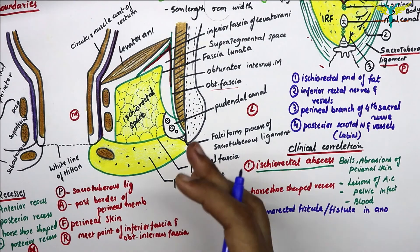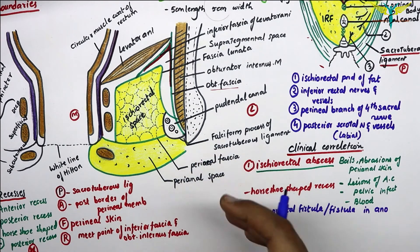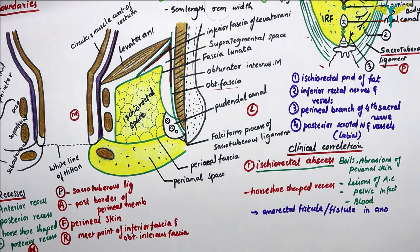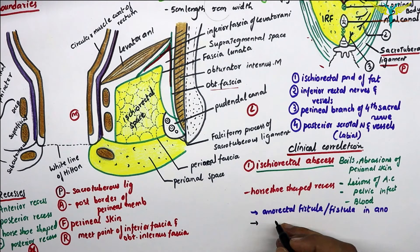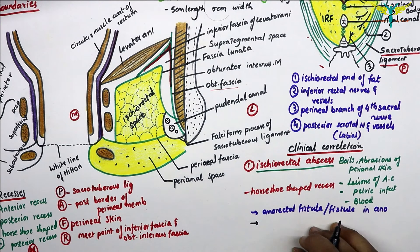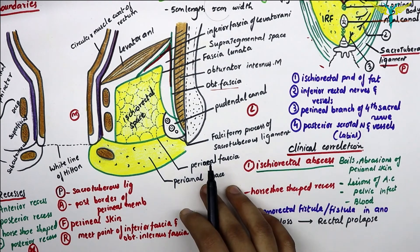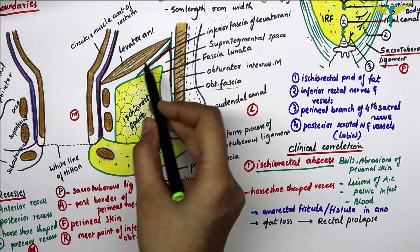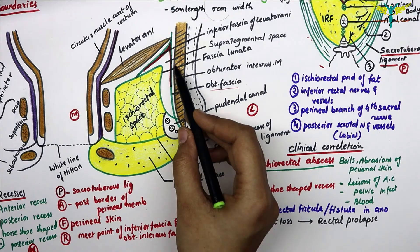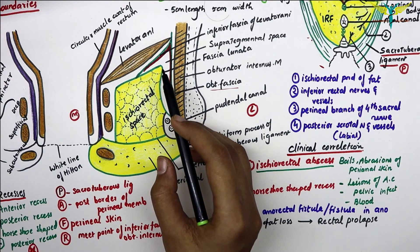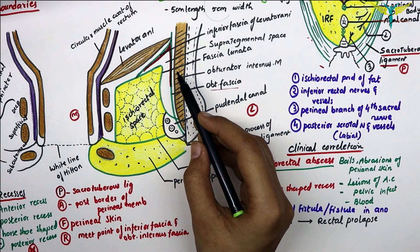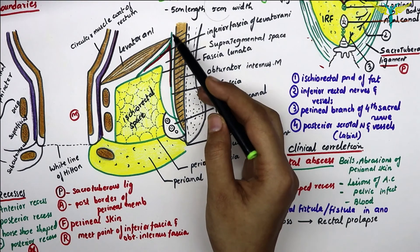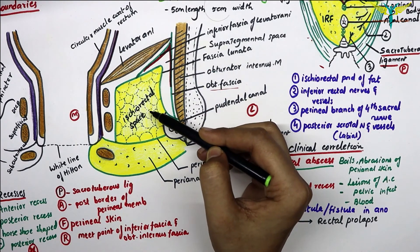The fat in the fossa provides cushion-like support to the rectum and anal canal. Loss of anorectal fat, mainly seen in children in diseases like diarrhea, can cause rectal prolapse. Occasionally, a gap exists between the tendinous origin of the levator ani muscle and the obturator fascia. This gap is called the hiatus of Schwalbe, and sometimes pelvic organs above this gap can herniate into the ischiorectal fossa.